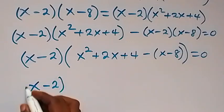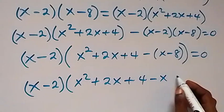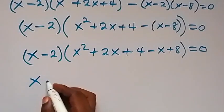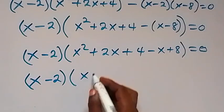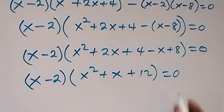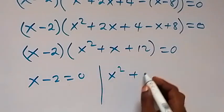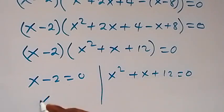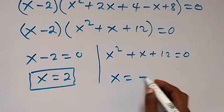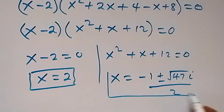Simplifying the bracket: x squared, then 2x minus x gives plus x, then 4 plus 8 gives plus 12. So we have x minus 2 times (x squared plus x plus 12) equals zero. The two cases are: x minus 2 equals 0, so x equals 2 — the same as before — and x squared plus x plus 12 equals 0, giving x equals minus 1 plus or minus root 47 i over 2. These are the two ways of solving this problem.